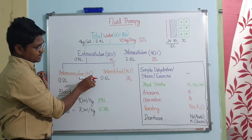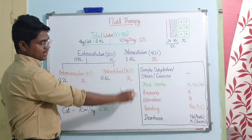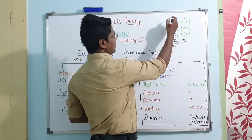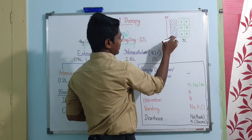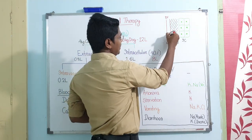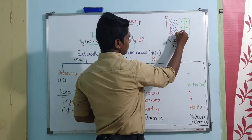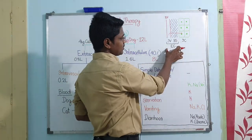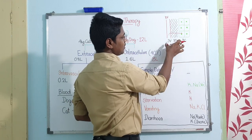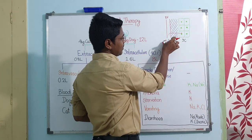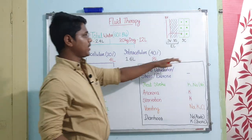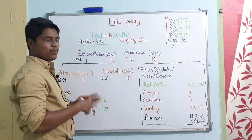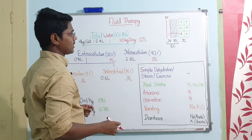The extracellular compartment is again divided into the intravascular compartment and interstitial compartment. The intravascular compartment is 5%; the interstitial compartment is 15%. The intravascular compartment fluid will travel through the interstitial compartment to the intracellular compartment. The body is composed of cells, so that is why the intracellular compartment is more - it keeps more water.